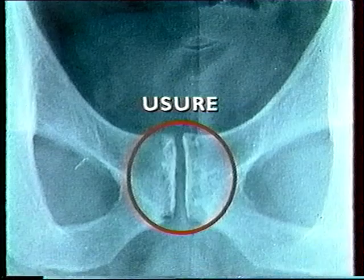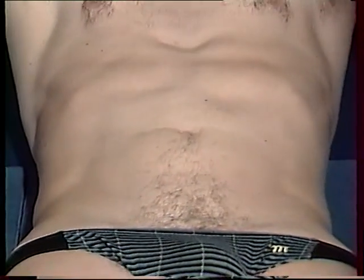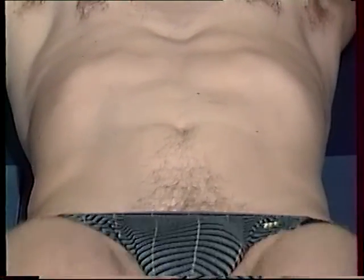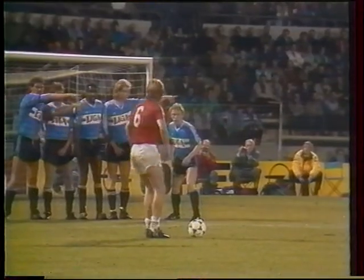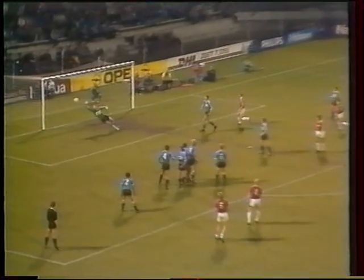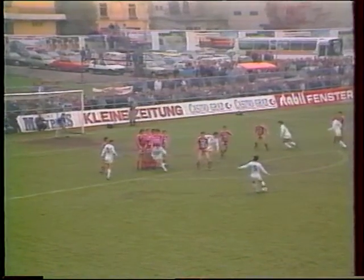Comment soigne-t-on une pubalgie ? Les médecins sont partagés. Le traitement va de la modification des habitudes alimentaires à l'opération chirurgicale en passant par les anti-inflammatoires. Mais le meilleur traitement, c'est encore la prévention : prévenir les lésions par un entraînement adapté, l'assouplissement des adducteurs, la musculation des abdominaux et une hygiène alimentaire cohérente. Les footballeurs doivent avant tout retrouver l'équilibre musculaire qu'ils n'auraient jamais dû perdre.